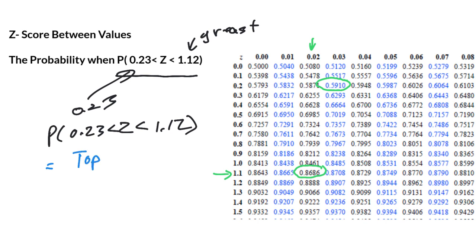So you're going to write the probability of Z being less than 1.12 minus the probability of P of Z being less than 0.23. So you end up with these two numbers, 0.8686 minus 0.5910.